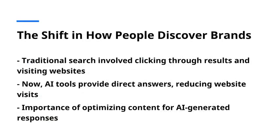Generative AI tools like ChatGPT, Google SGE, and Perplexity are changing how people search for and engage with content. Traditional SEO is no longer the only path. AI models now summarize and present answers directly, often bypassing websites. Adobe Optimizer helps brands adapt to this new landscape.